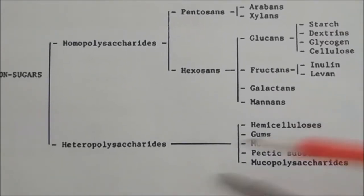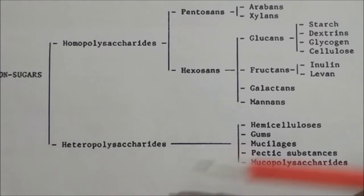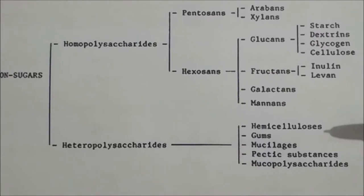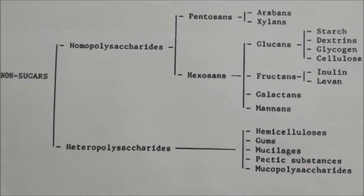For heteropolysaccharides, we have hemicellulose, gums, mucilages, pectins, and mucopolysaccharides. These are the different types of classifications of sugars and non-sugars.